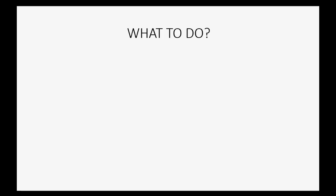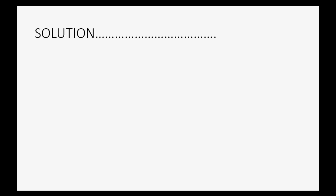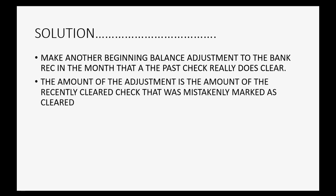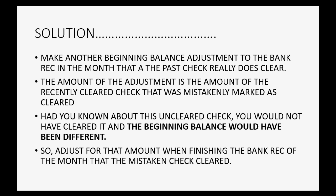You assumed all past checks had cleared, marked them as cleared, and May's reconciliation was perfect. But there was one check that really did not clear, and it wound up clearing after you started reconciling. In that case, using the method described with the two simple steps, you would need to add a third step after the fact. Should you delete it? No — it will change the cleared balance. Should you enter it? No — it's already entered. The solution in that rare case is to make another beginning balance adjustment in the month that the past check really does clear. The amount of the adjustment equals the amount of the recently cleared check that was mistakenly marked as cleared. Adjust for that amount when finishing the bank rec of the month in which the mistaken check has cleared.